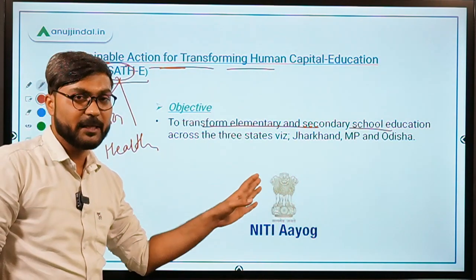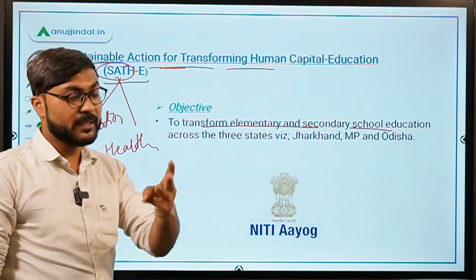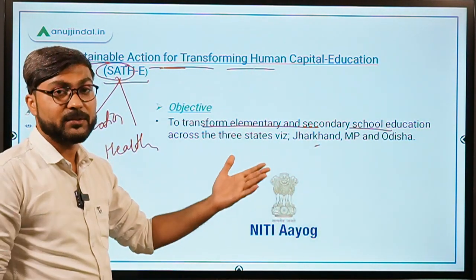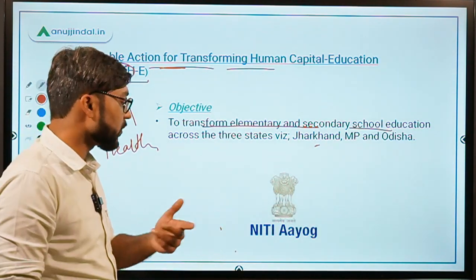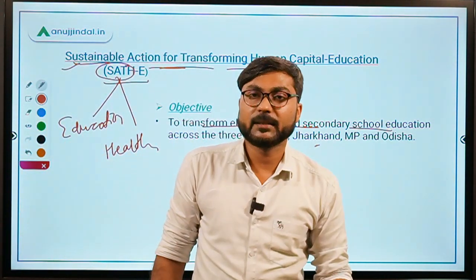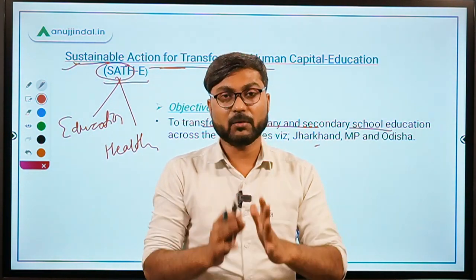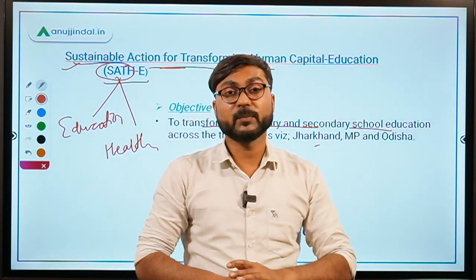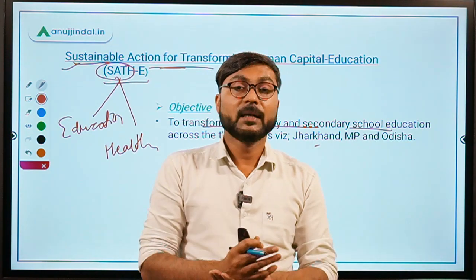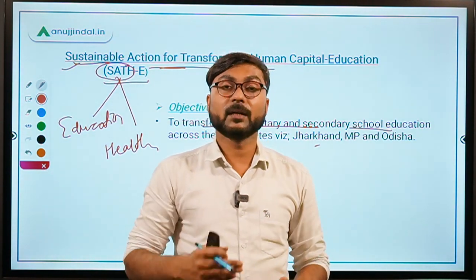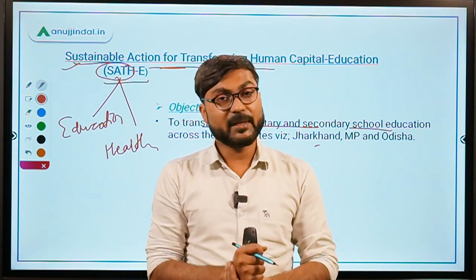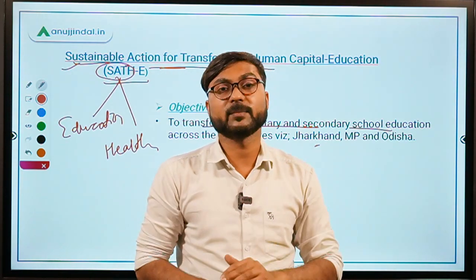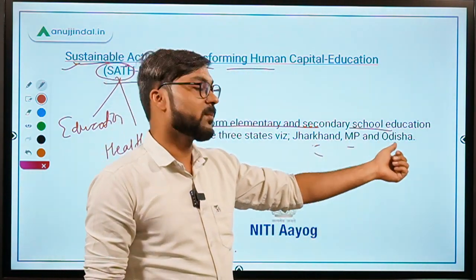This is very important: it is not a Pan-India scheme. It is just for three states. The three states are Jharkhand, Madhya Pradesh, and Odisha. NITI Aayog sent invitations to states in 2017, and two knowledge partners would provide support in improving secondary and primary education. Out of 16 states that responded, the best three — Jharkhand, MP, and Odisha — were selected.